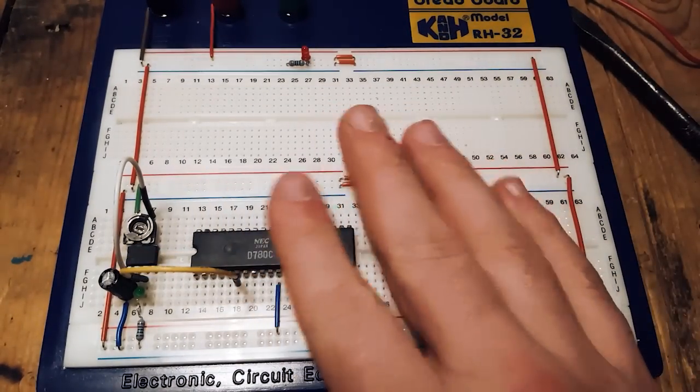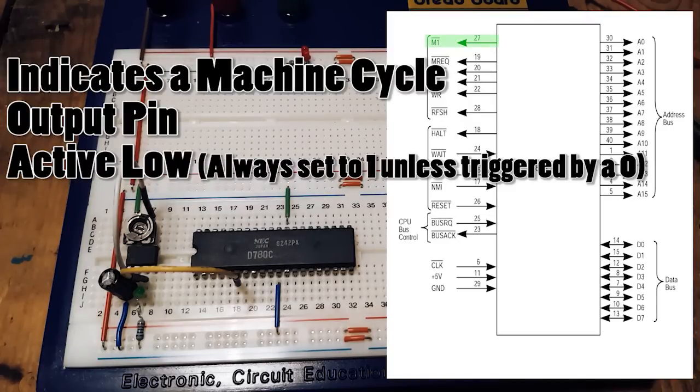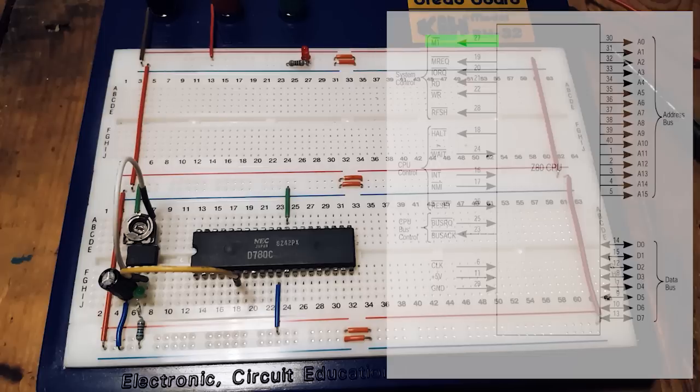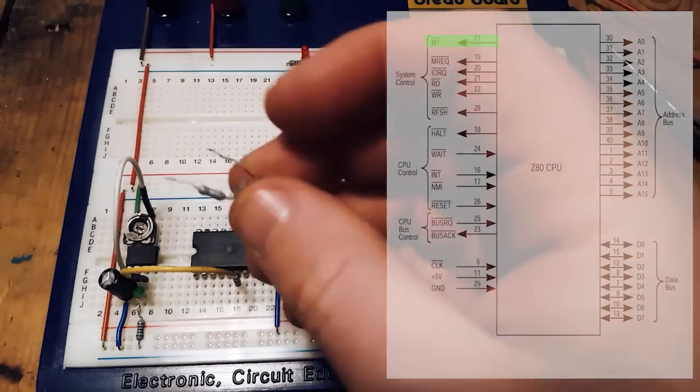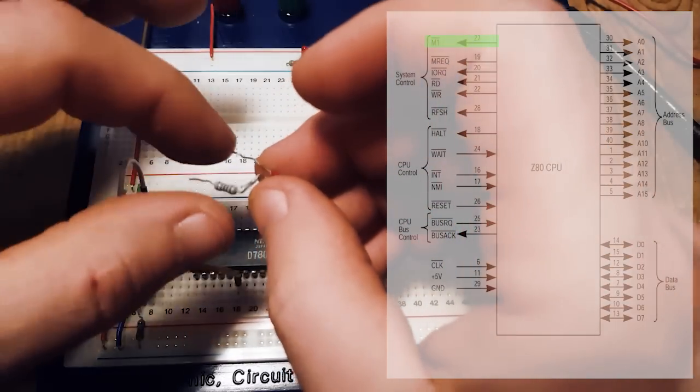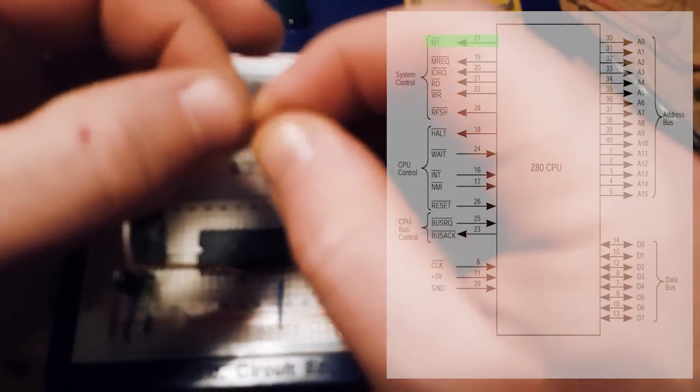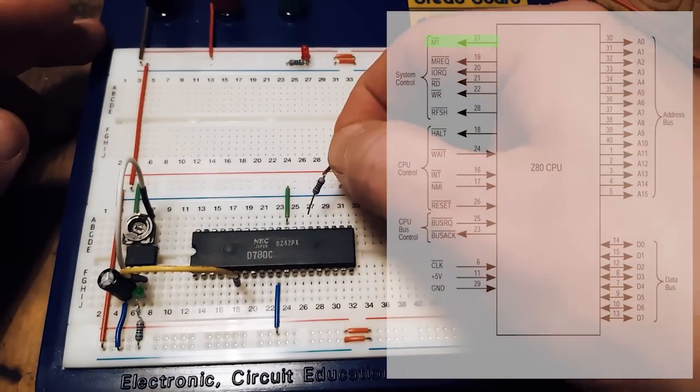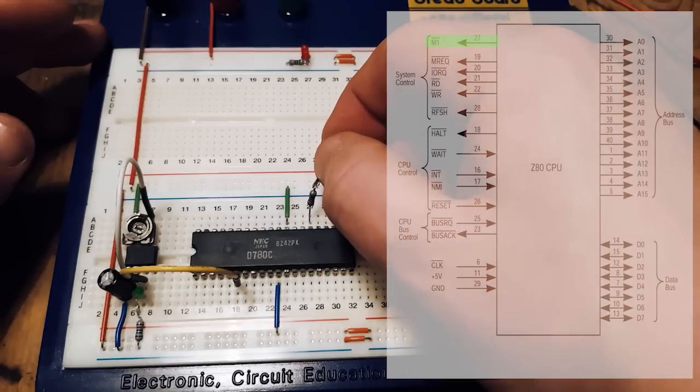To do this, we're going to connect the M1 line. And I think M1 is the machine cycle one, essentially. It's just an indicator that we've started the machine cycle, essentially. That's all it is. So to do this, we're going to do something similar and the M1 is pin 27. And we're going to do something similar, which is use an LED and a resistor in series. We're just going to invert them here because I just want to make sure that it powers on when it goes low.